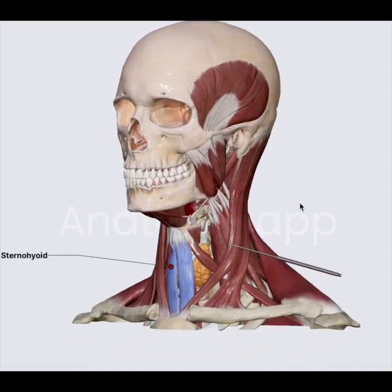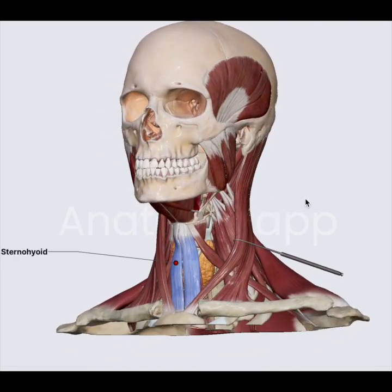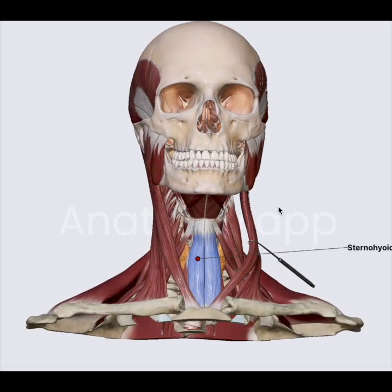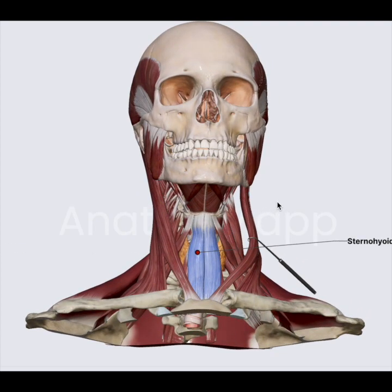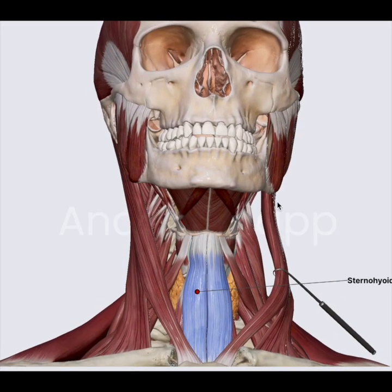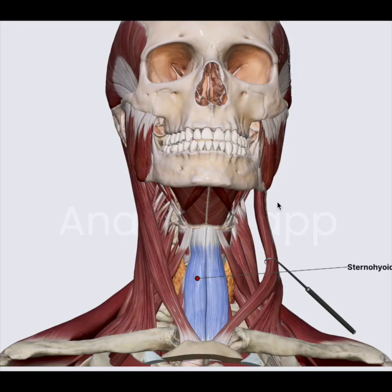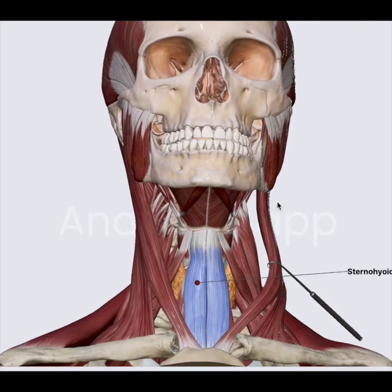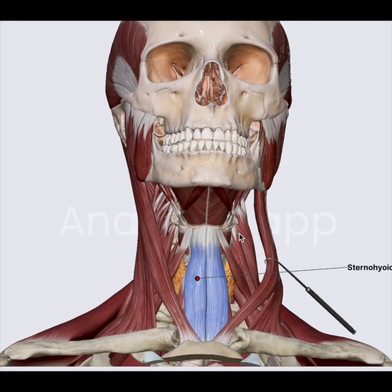Let's start with the infrahyoid muscles. The infrahyoid muscles are four muscles located inferior to the hyoid, as clearly obvious by the name. They connect the sternum and scapula and also help in movement of the larynx. These four muscles are the sternohyoid, omohyoid, sternothyroid, and thyrohyoid.